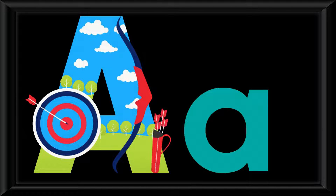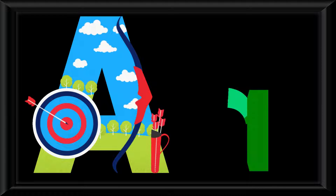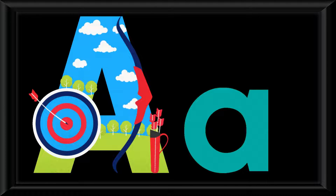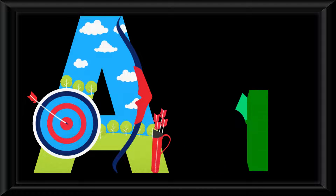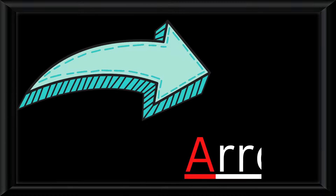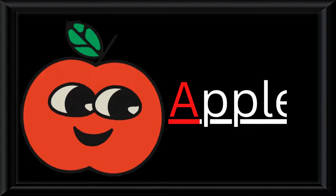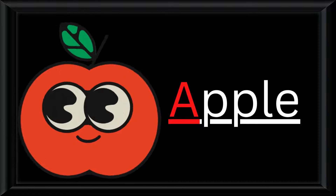The name for this letter is A. The sound it makes is A. Look at some words that start with this sound. A is for ant — A, A, ant. A is for arrow — A, A, arrow. A is for apple — A, A, apple.